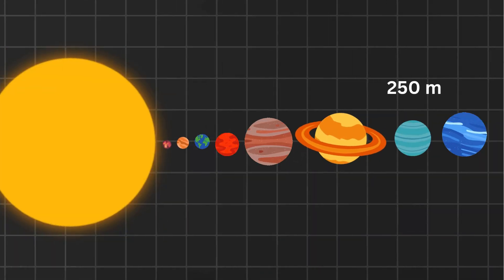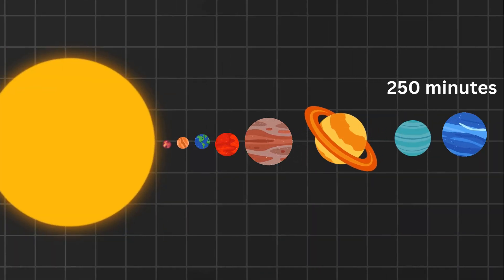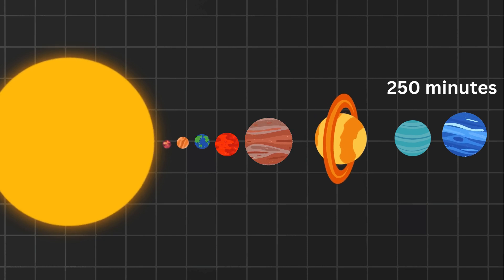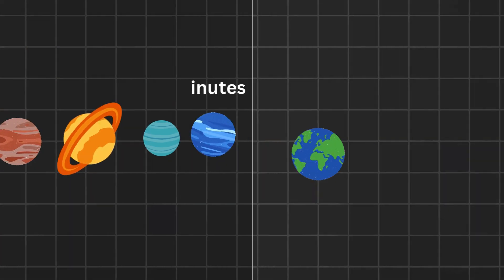Last one is Neptune, the farthest planet, gets its sunlight after 4 hours and 10 minutes. Imagine looking up and seeing a sun that's already 4 hours old. Time travel is real, sort of.